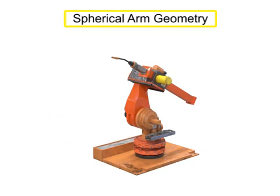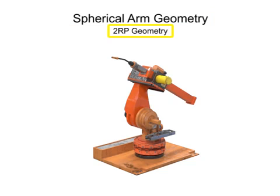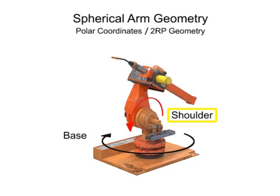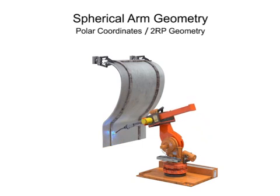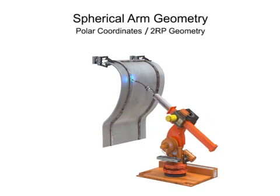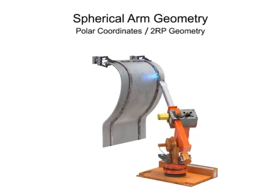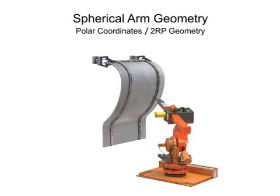Spherical arm geometry robots can rotate in two directions and move linearly in one, and thus are given the designation of 2RP. The robot has base rotation, shoulder rotation, and prismatic or linear motion at the arm. This type of robotic arm is most often used in machine tending, material handling, welding, painting, coating, and assembly tasks.